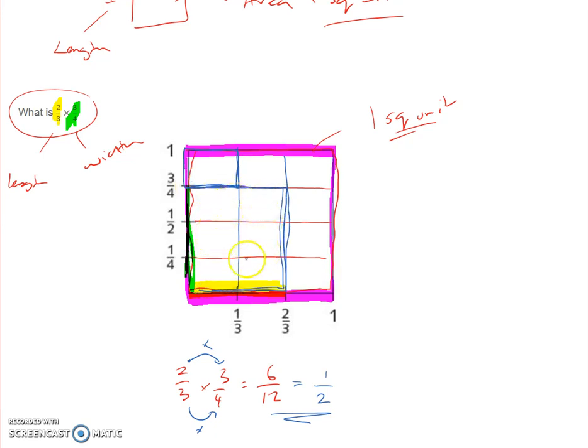And then I count, I've got six. So I have six squares, but what are the size of these squares? They're twelfths. So that's how I get the six twelfths.